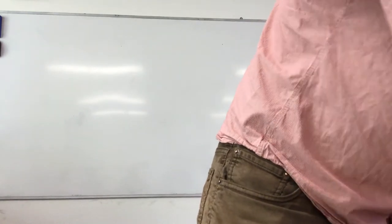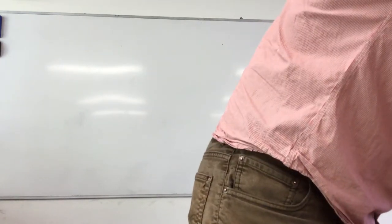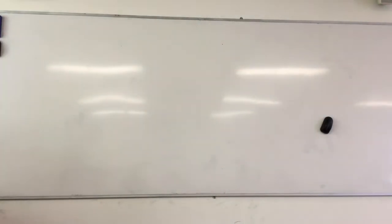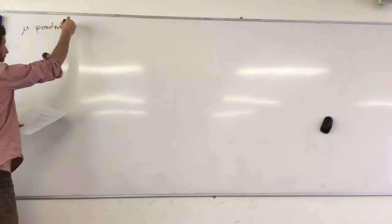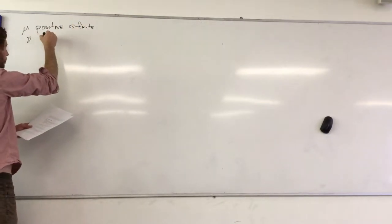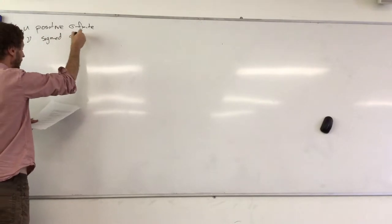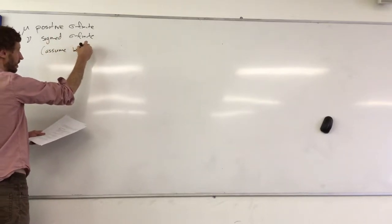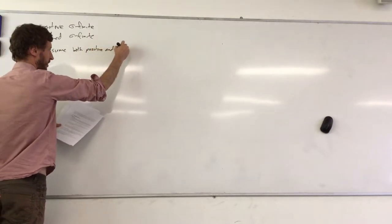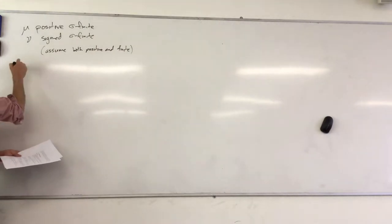We should get started. Unfortunately last time we were out of time at an awkward moment, so we're in the middle of proving the Radon-Nikodym theorem. Let's very quickly remember what's going on. Mu was positive and sigma finite, but for the sake of the argument we're going to assume both positive and finite, and leave it as an easy exercise to prove the general theorem from those.